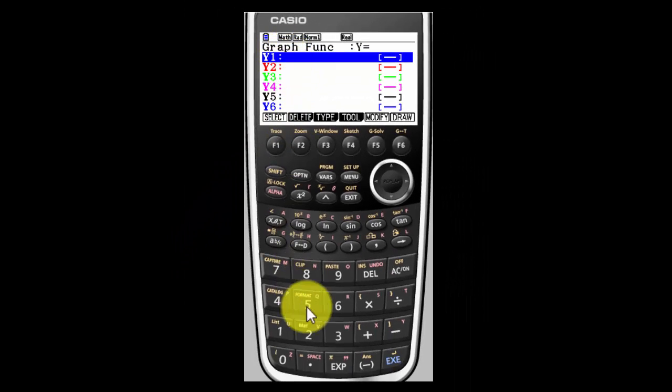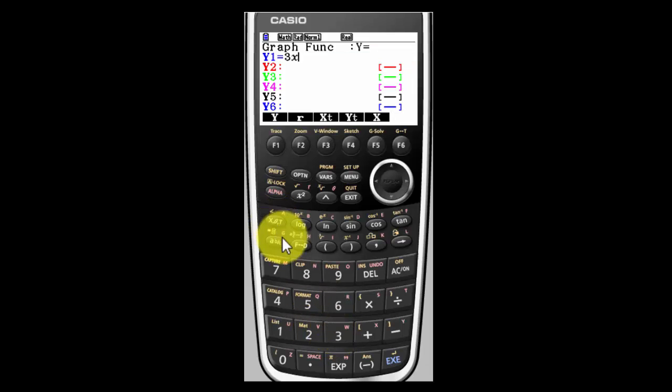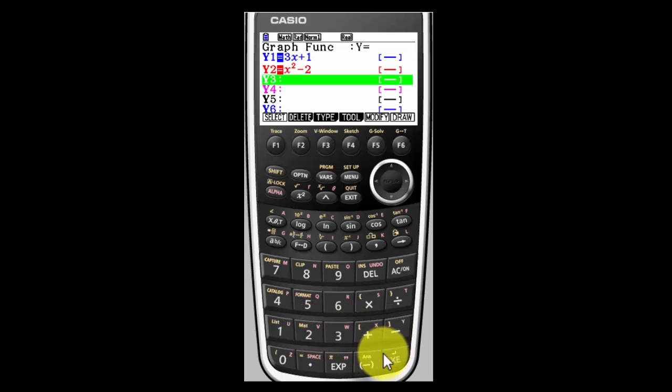And I'm going to put in three different graphs. I'm going to put in 3x plus 1 as one of my graphs. Execute. I'm going to type in x squared minus 2 as another function. And I'm going to say 4x plus 6 as my third function.